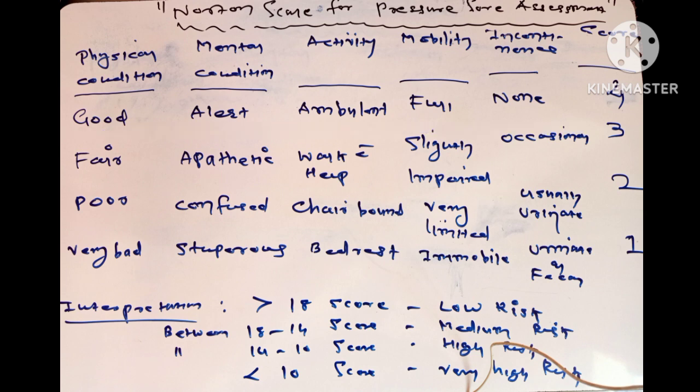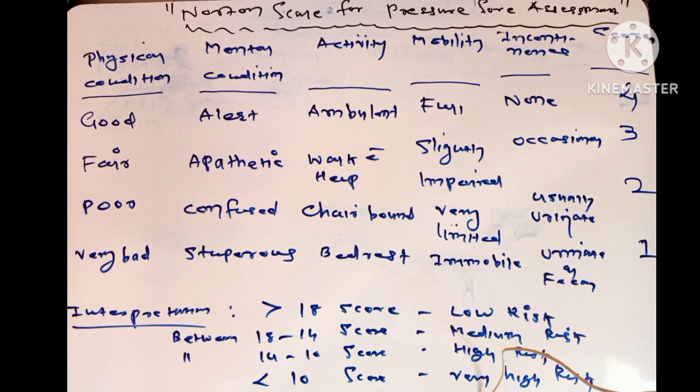Now look at the interpretation. If your score is above 18, the patient has low risk. Score between 18 to 14 means medium risk, and 14 to 10 is high risk. Suppose the score is below 10, that means the patient is at very high risk to develop pressure sore ulcers.